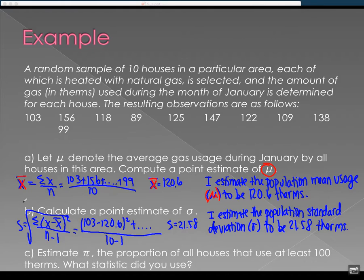Lastly, estimate pi, the proportion of all houses that use at least 100 therms. So pi is population proportion, and then it says what statistic did you use?